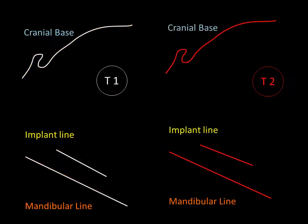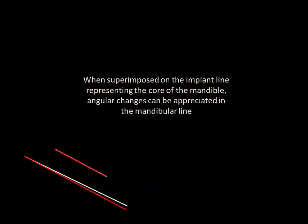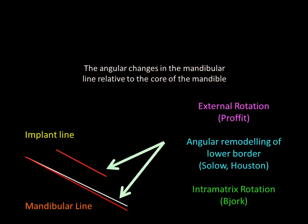Again, let's consider two tracings at two time points T1 and T2, and this time superimposing on the implant line as the reference line. When superimposed on the implant line representing the core of the mandible, angular changes can be appreciated in the mandibular line. The angular changes in the mandibular line related to the core of the mandible has been called external rotation by Prophet, angular remodeling of lower border by Solow and Houston, and intramatrix rotation by Bjork.